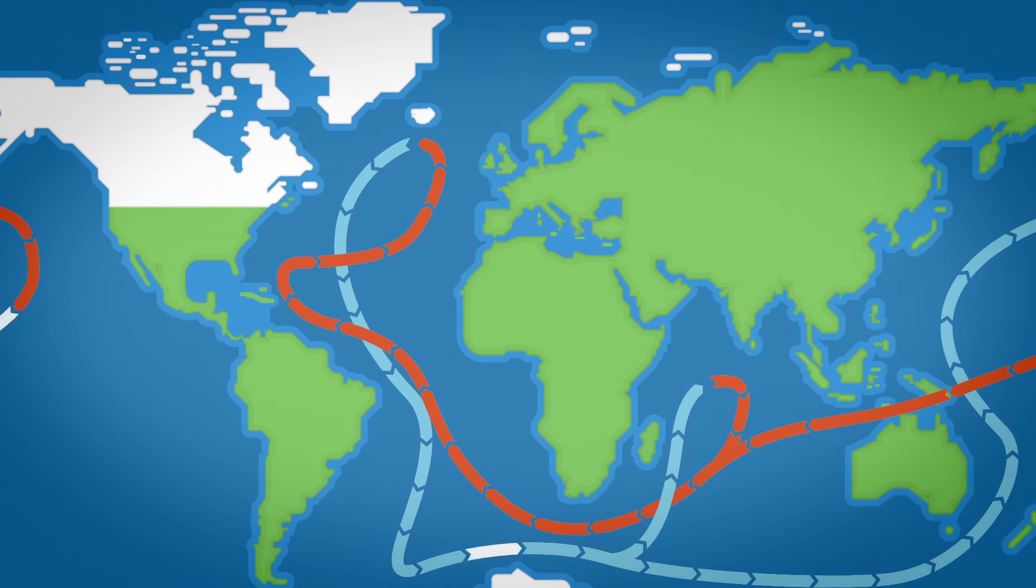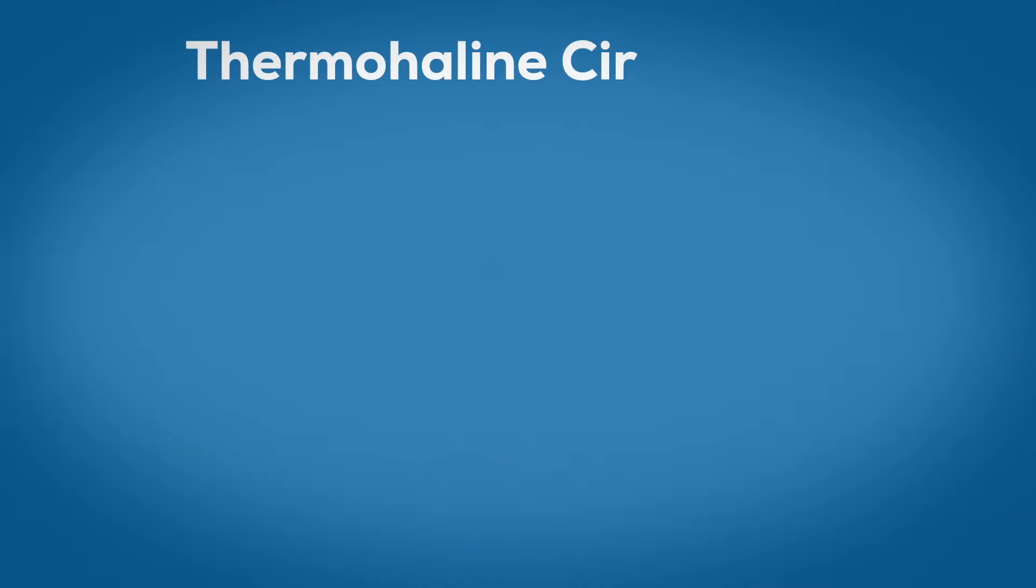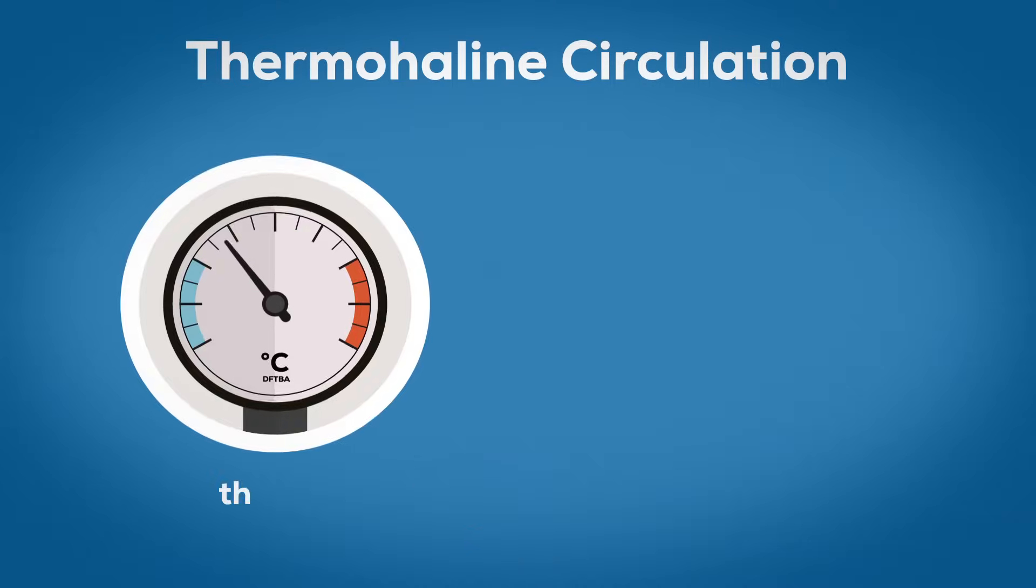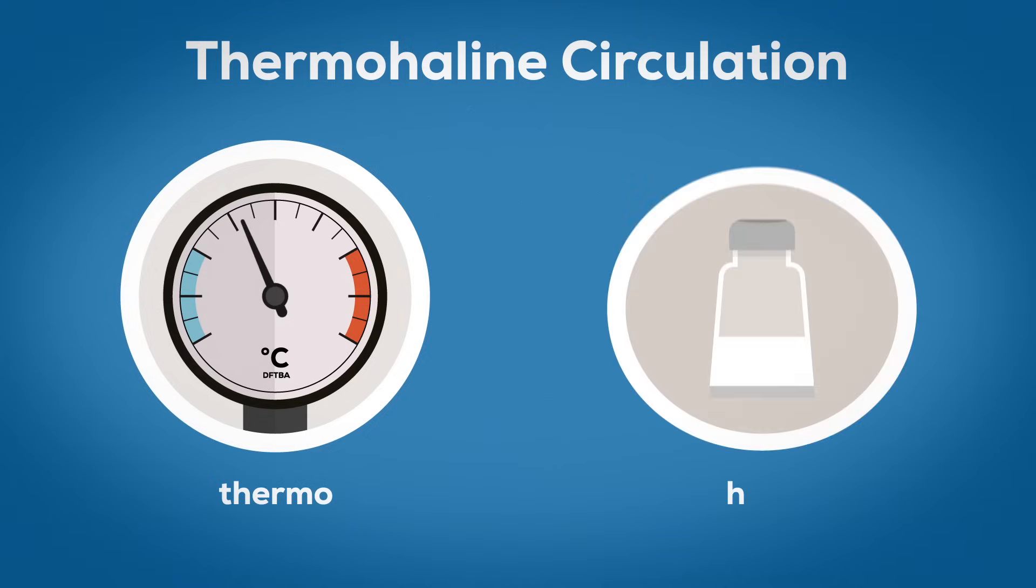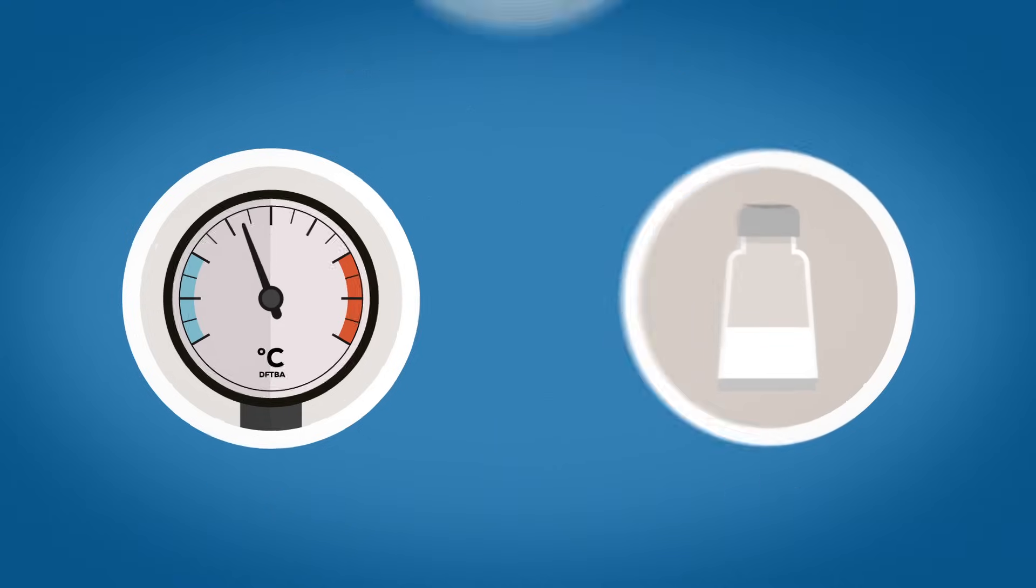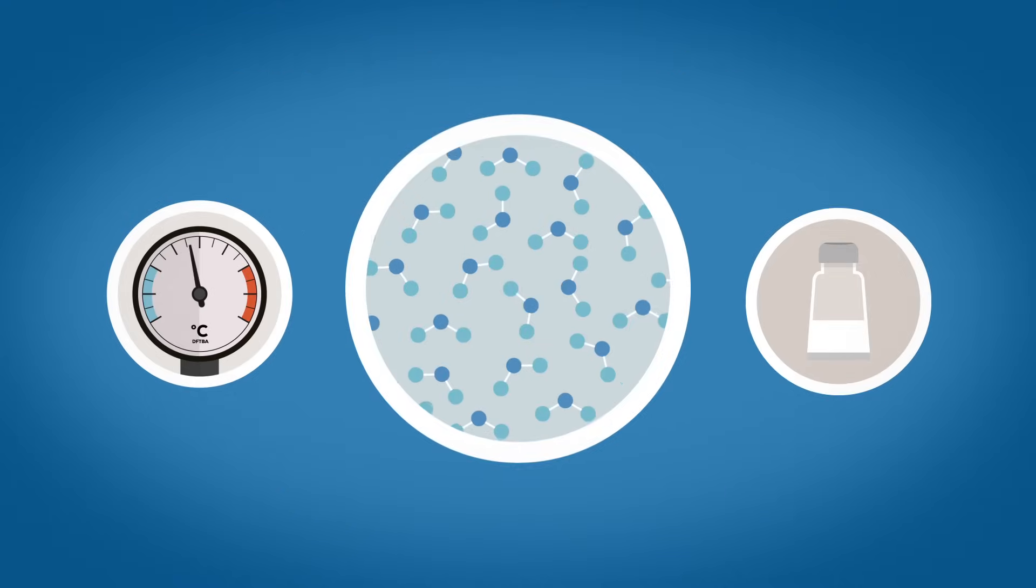The conveyor belt is also called the thermohaline circulation, with thermo referring to the temperature and haline to the salt content of the water. Both determine the density of the water.